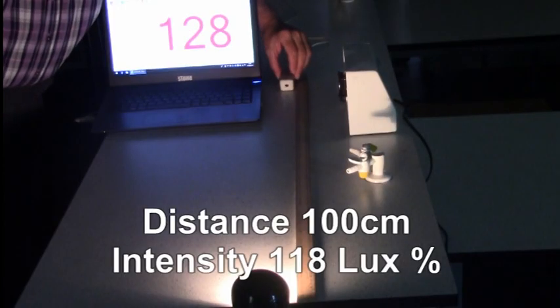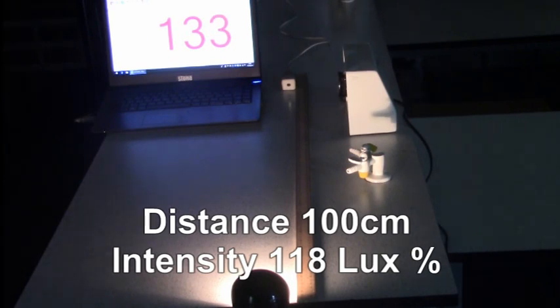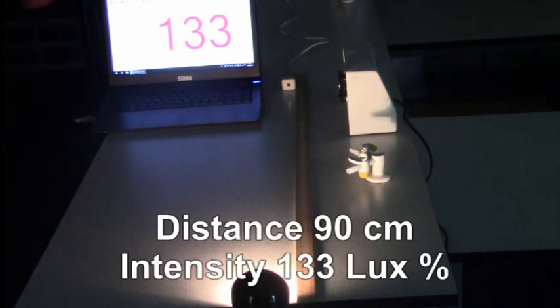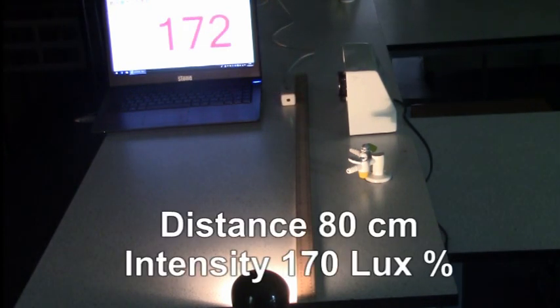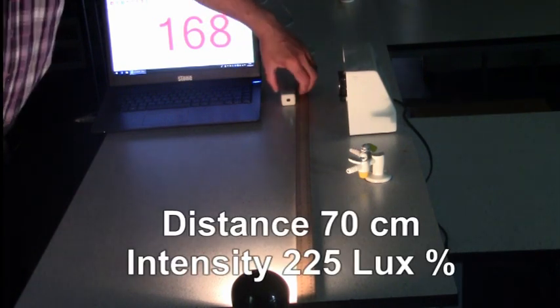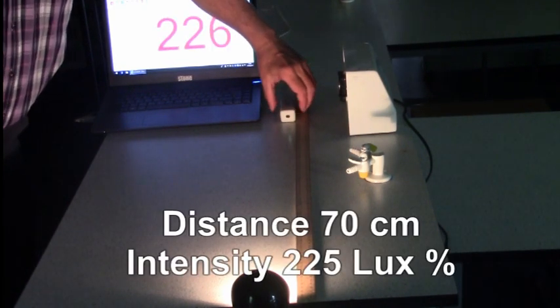Starting at 100cm, the intensity reading is 118. At 90cm, 133. At 80, 170. At 70, 225.